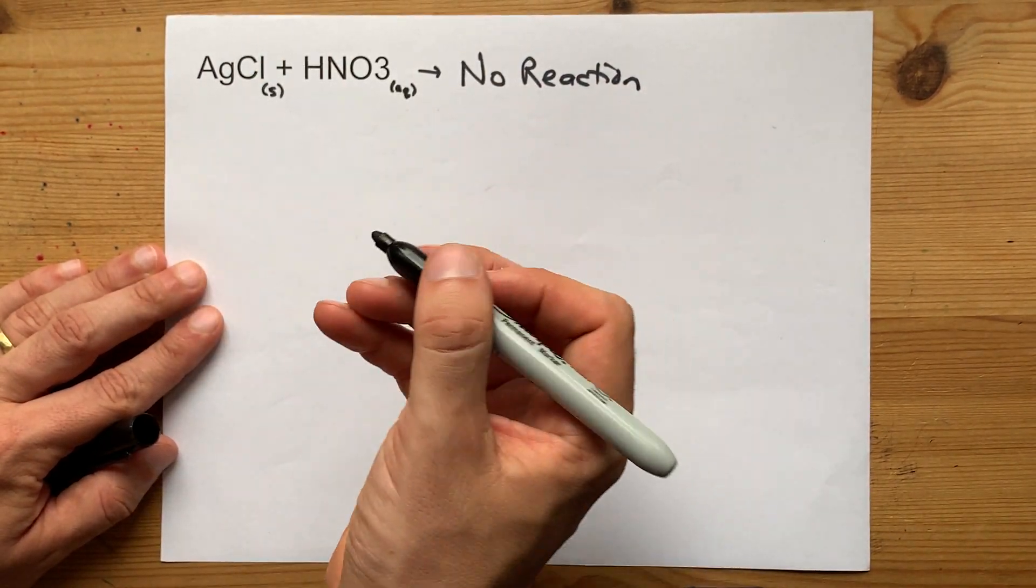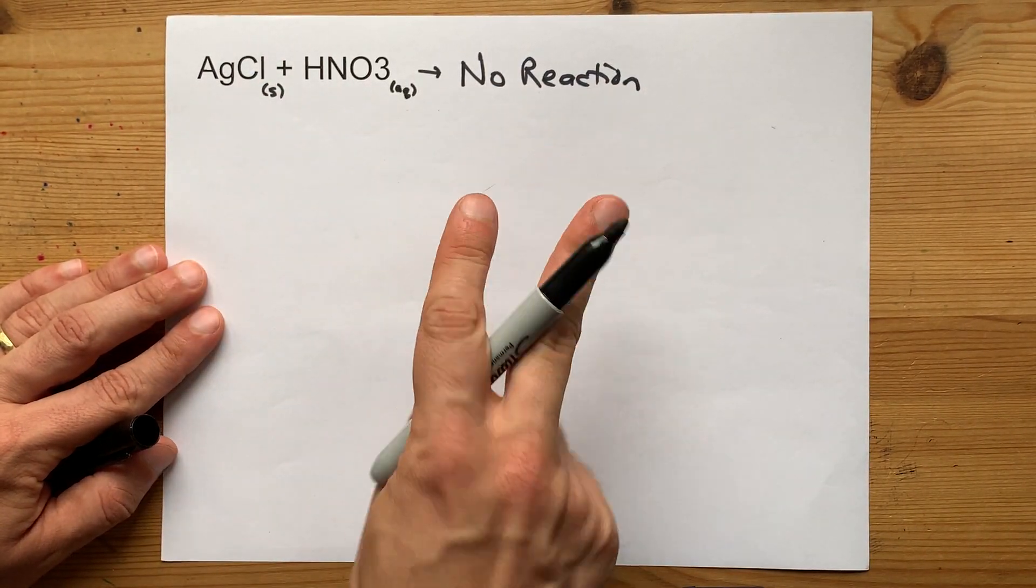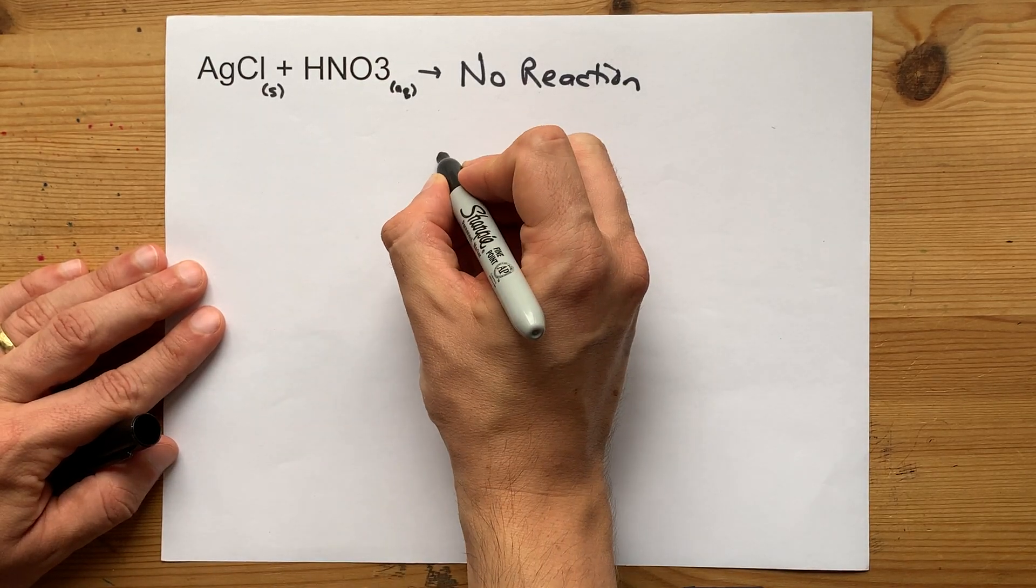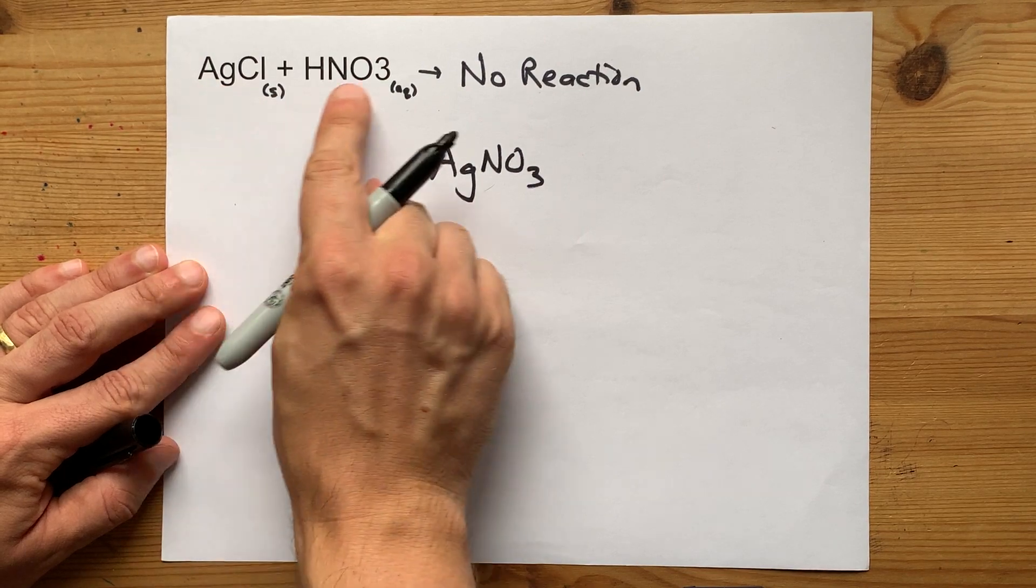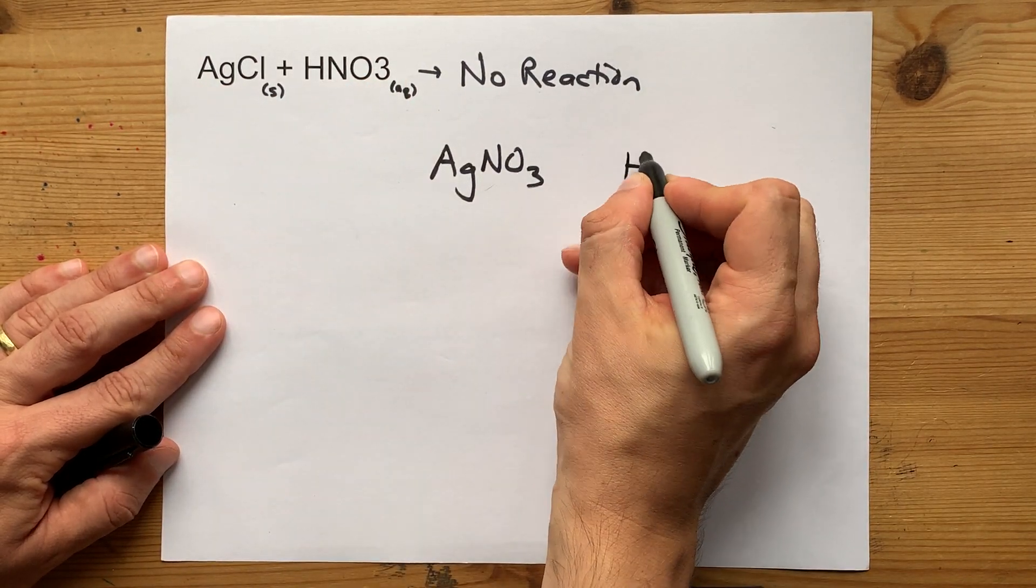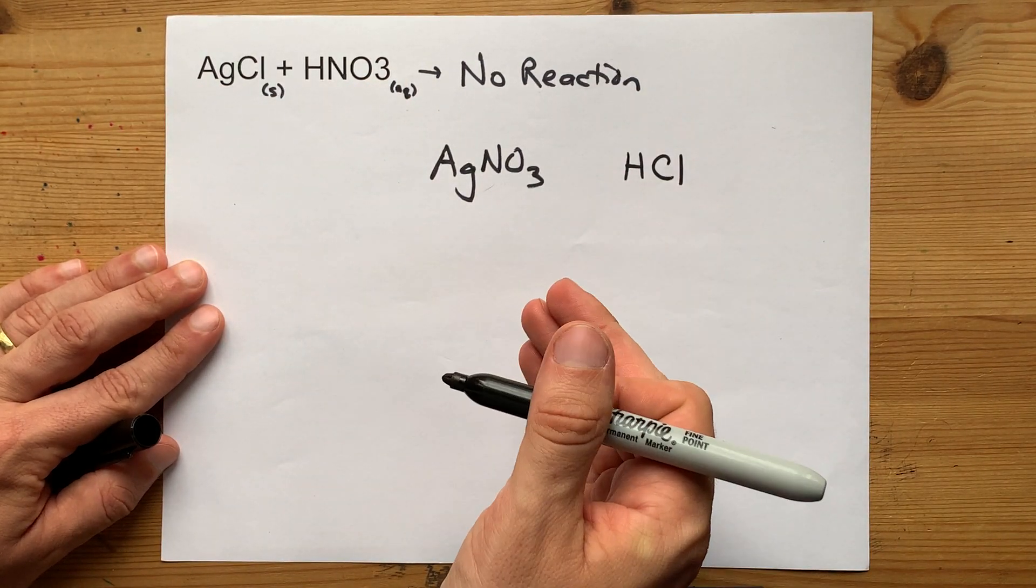you might think it's a double displacement where the ions switch partners. That would have given you silver nitrate, see how the silver is now paired with the nitrate, and hydrogen chloride or hydrochloric acid.